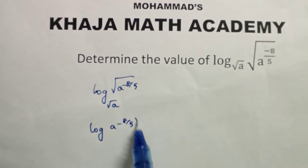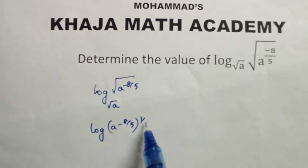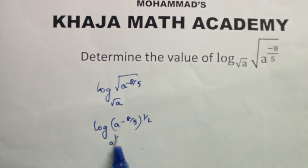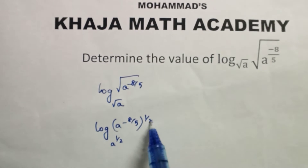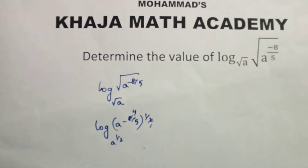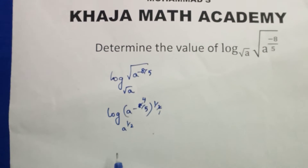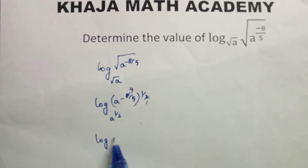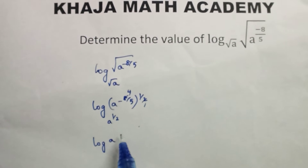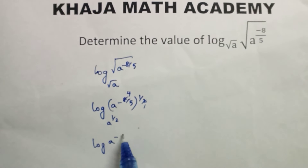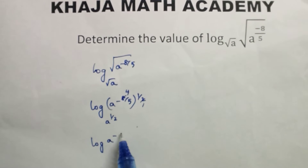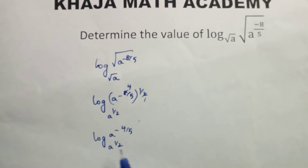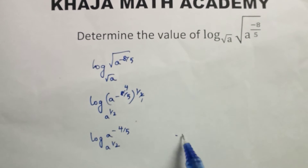This can be written as log of a power minus 8 by 5, whole power 1 by 2, to the base a power 1 by 2. Simplifying, this becomes log of a power minus 4 by 5, to the base a power 1 by 2.